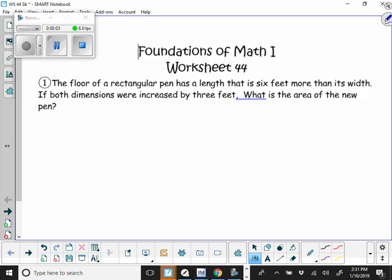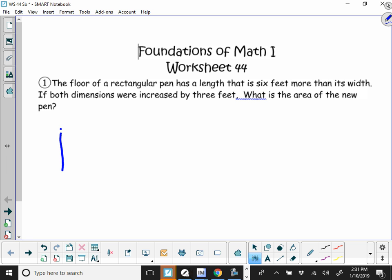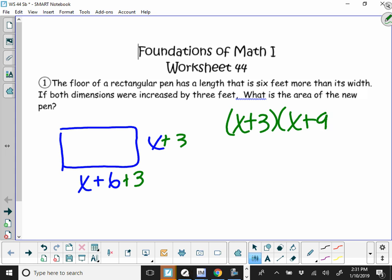All right, looking at worksheet 44. We've got the floor of a rectangular pen has a length that is six feet more than its width. Then it says that both dimensions were increased by three feet. So that means we're going to find the area by doing x plus three times x plus nine.